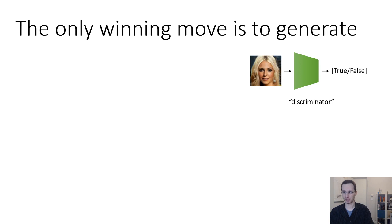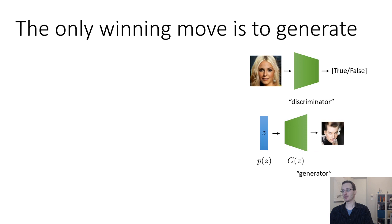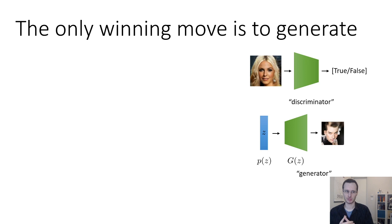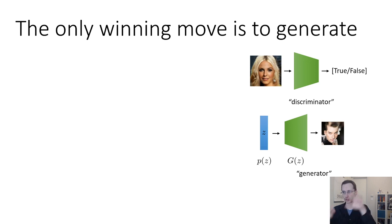So we have two networks. We have this classifier, which we call a discriminator because it attempts to discriminate whether an image is real or not. And then we have our generator, which for simplicity is just a deterministic function — it maps a vector of random numbers z to images, with no stochastic x given z. Unlike normalizing flows, it does not have to be invertible and the dimensionality does not have to match. It's just like the VAE decoder, only instead of outputting a distribution it outputs a single image.